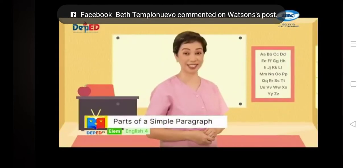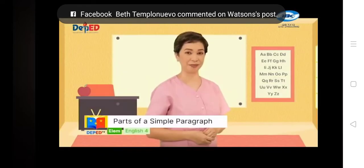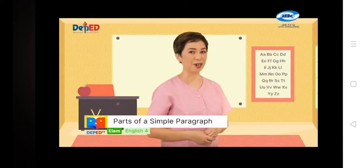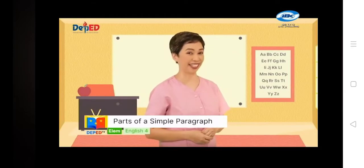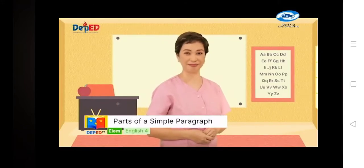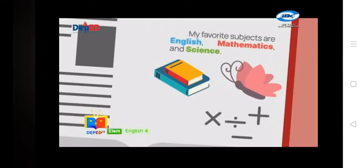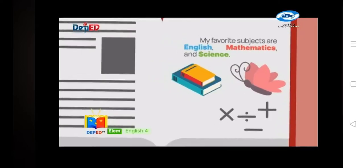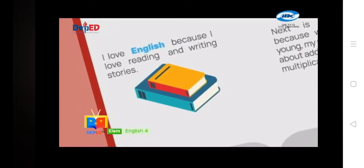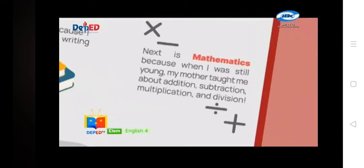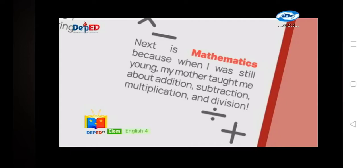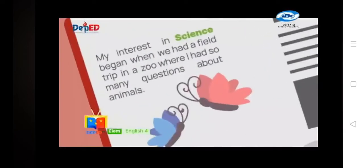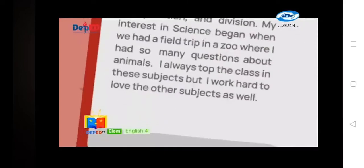I think you're getting really skilled at this. Let's move on to our next activity. Read each sentence carefully because we are going to answer questions about it. Read with me: My favorite subjects are English, Mathematics, and Science. I love English because I love reading and writing stories. Next is Mathematics — when I was still young, my mother taught me addition, subtraction, multiplication, and division. My interest in Science began when we had a field trip to a zoo where I had so many questions about animals. I always top the class in these subjects but I work hard to love the other subjects as well.